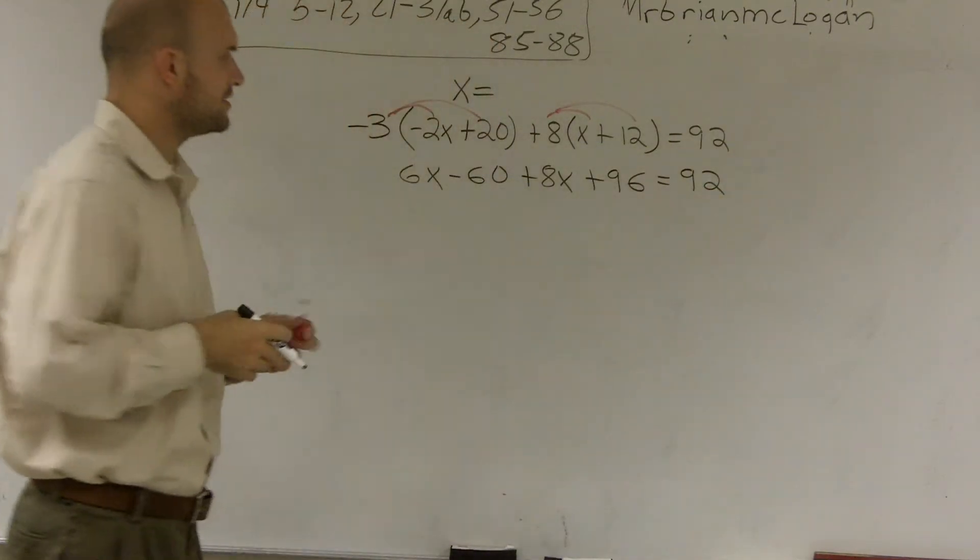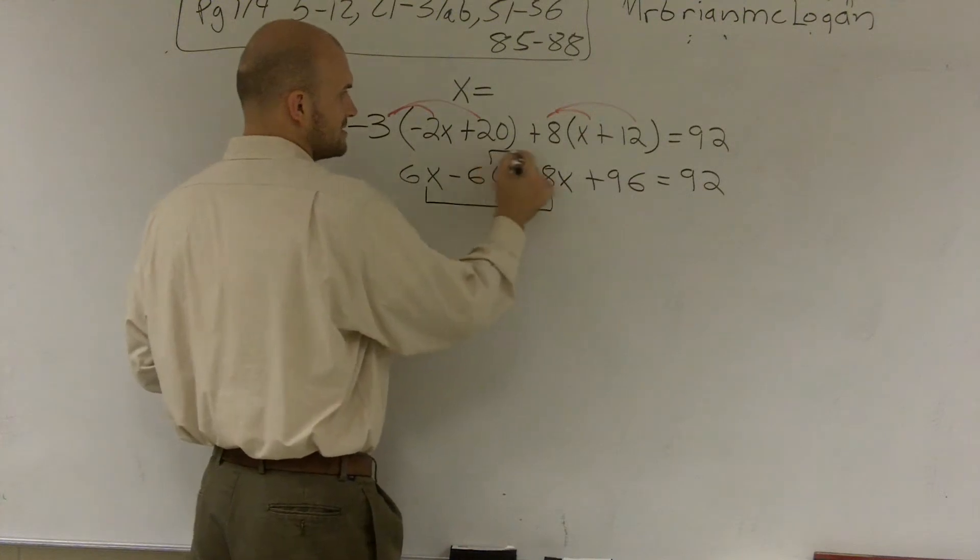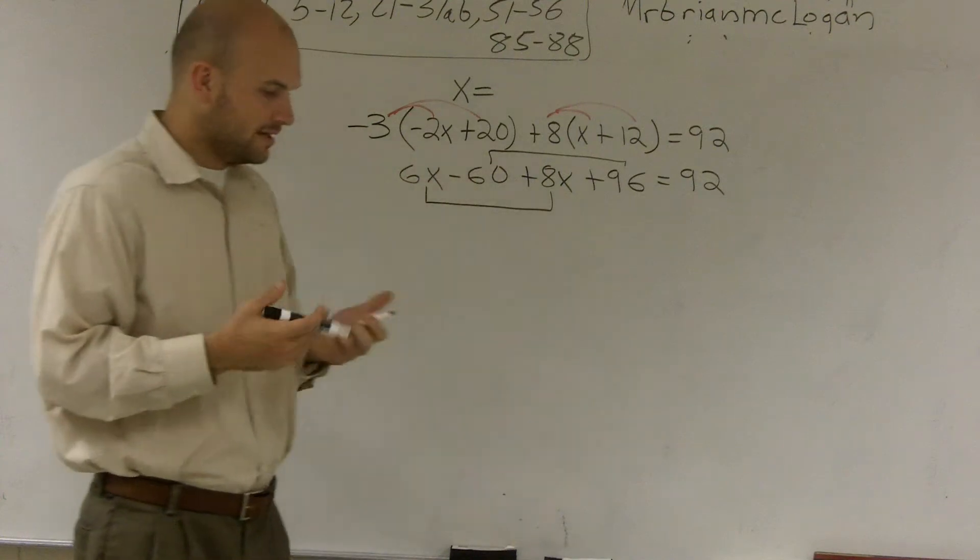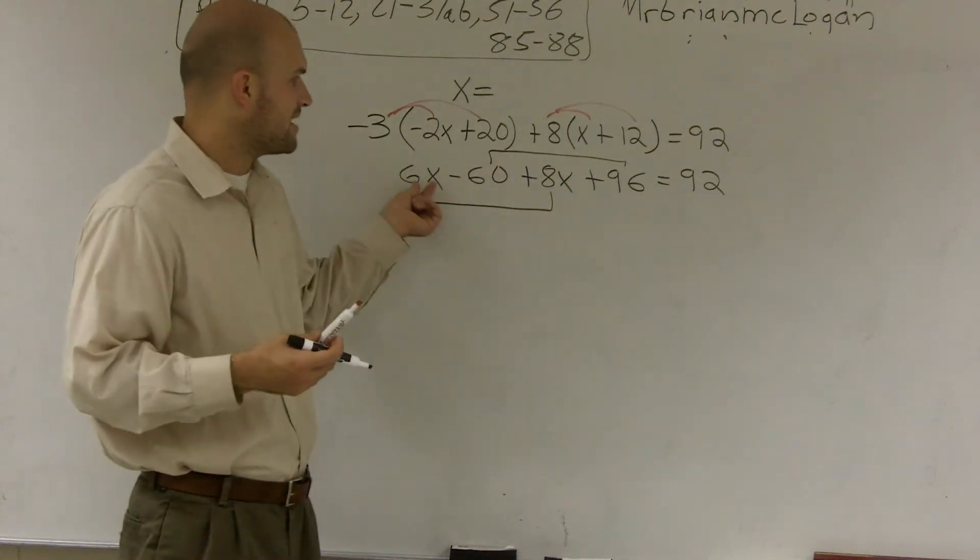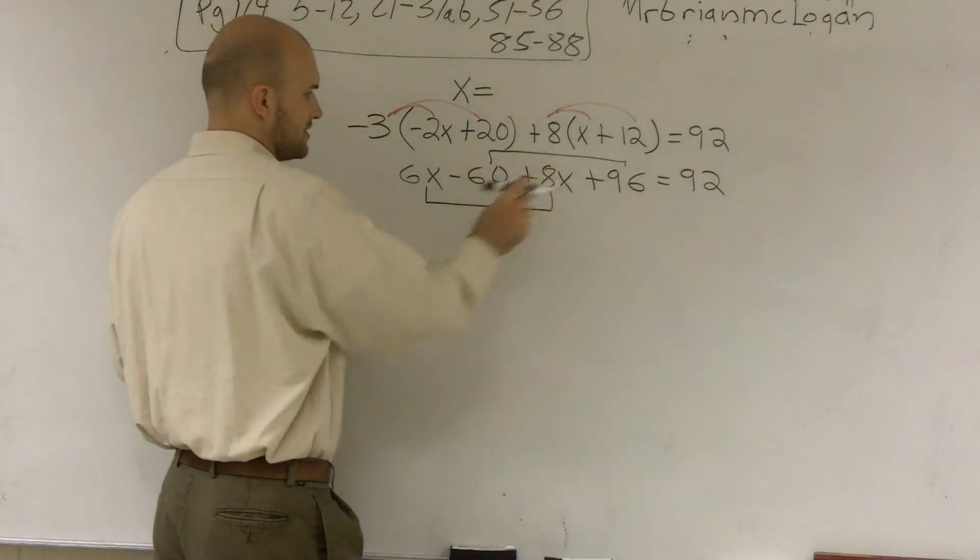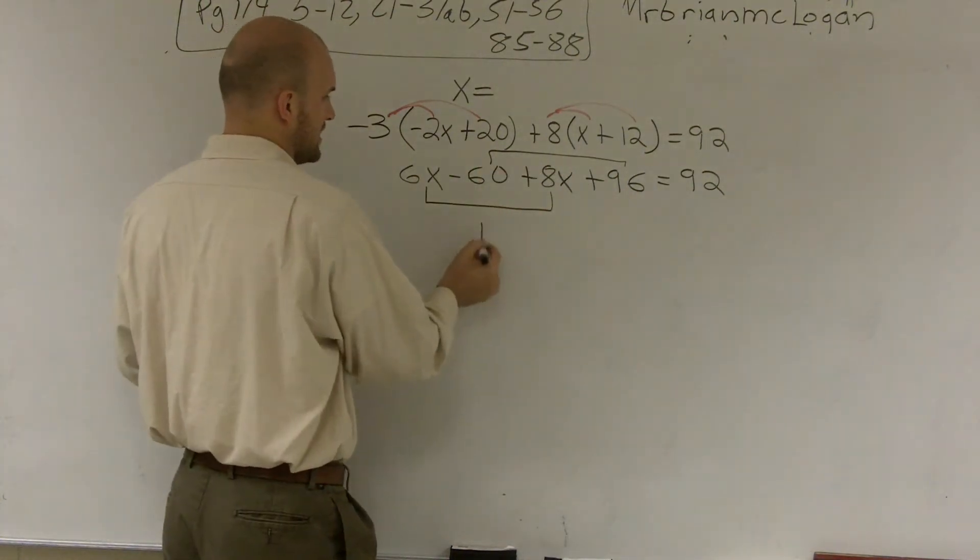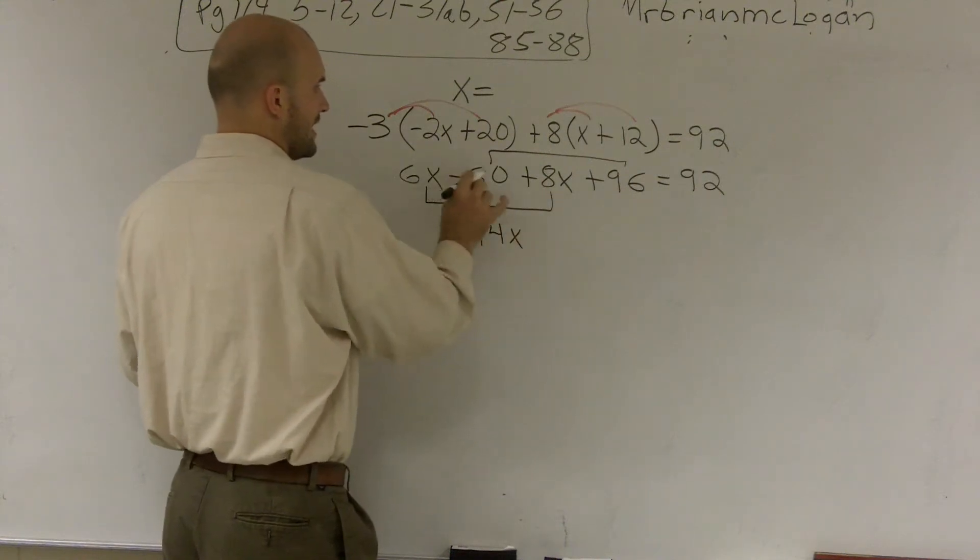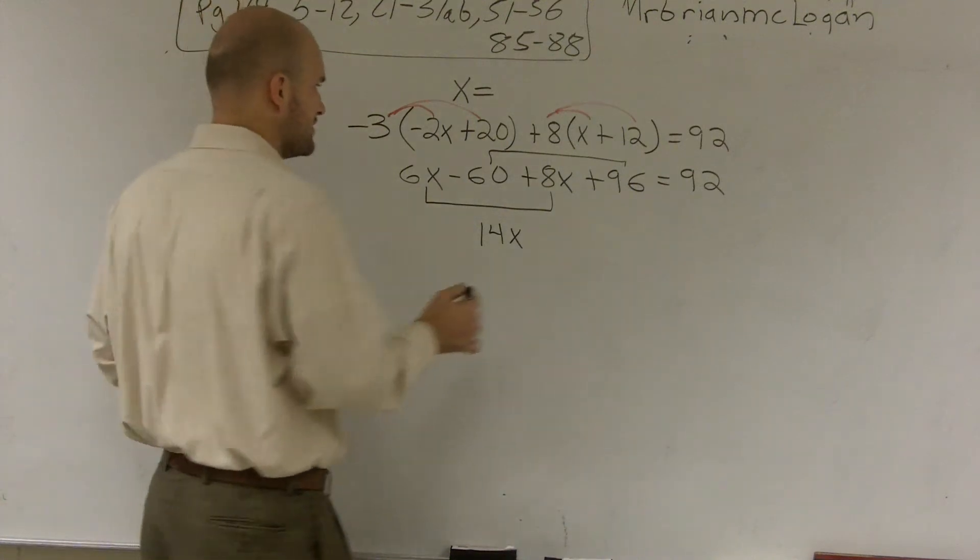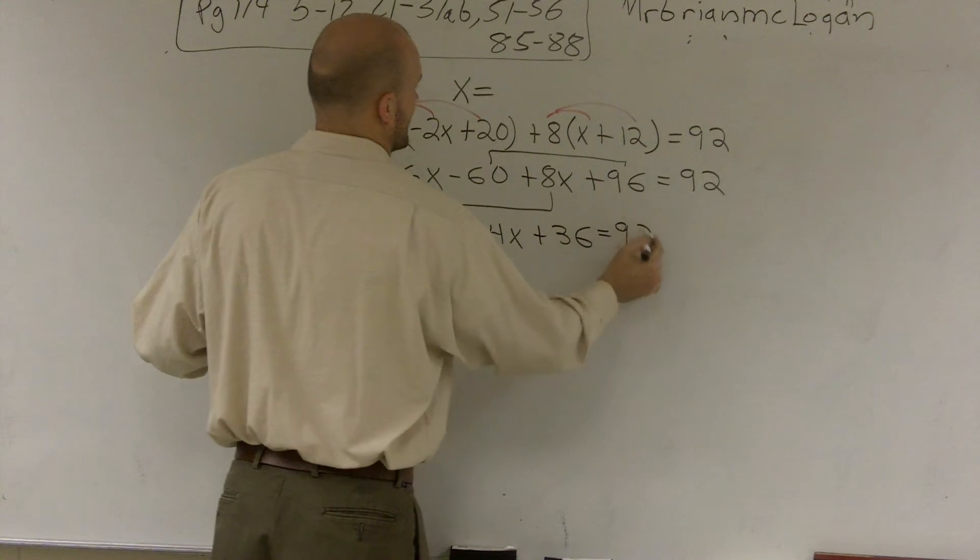And now what I can do is actually combine like terms. I see that I can combine these because they both have my x's, and I can combine my numbers. Remember, you can't add a constant multiplied by a variable to just a regular constant. So let's see, we get 6x plus 8x is going to leave me 14x. And let's see, we have negative 60 plus 96 is going to give me 36 equals 92.